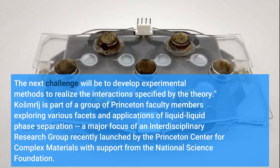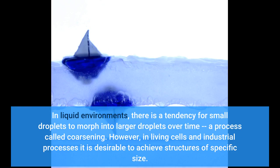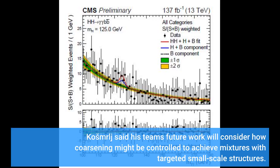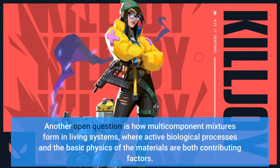The next challenge will be to develop experimental methods to realize the interactions specified by the theory. Cosmar-LJ is part of a group of Princeton faculty members exploring various facets and applications of liquid-liquid phase separation. In liquid environments, there is a tendency for small droplets to morph into larger droplets over time, a process called coarsening. However, in living cells and industrial processes it is desirable to achieve structures of specific size. Cosmar-LJ said his team's future work will consider how coarsening might be controlled to achieve mixtures with targeted small-scale structures. Another open question is how multi-component mixtures form in living systems, where active biological processes and the basic physics of the materials are both contributing factors.